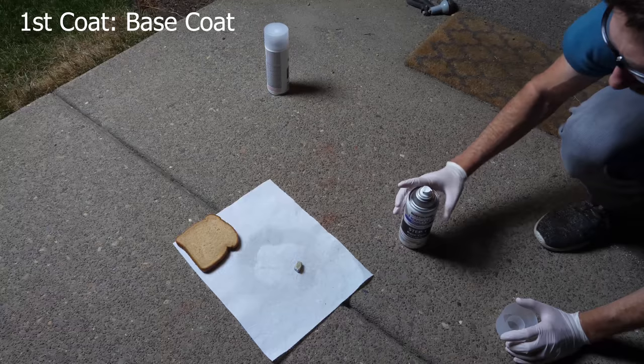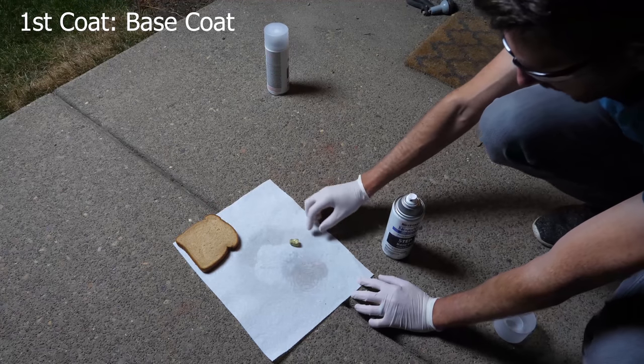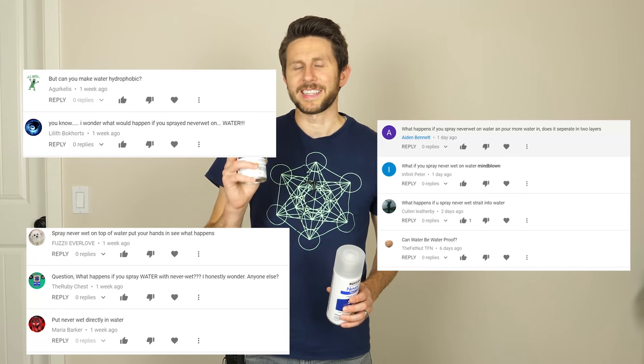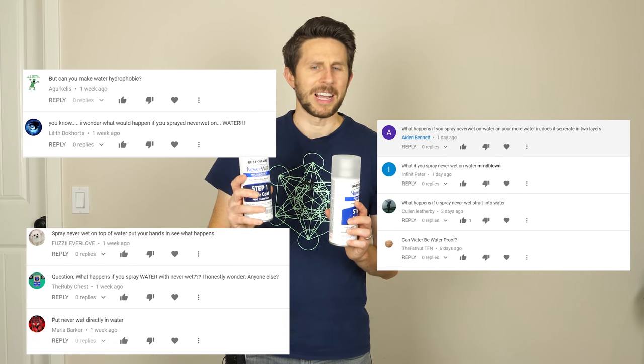So a few videos ago, I did a video where I sprayed NeverWet on sodium to see if it could repel water long enough so it didn't explode in the water. But in the comments section, I got a lot of comments asking what happens if you spray NeverWet on water itself. Can you actually make the water become water repellent?